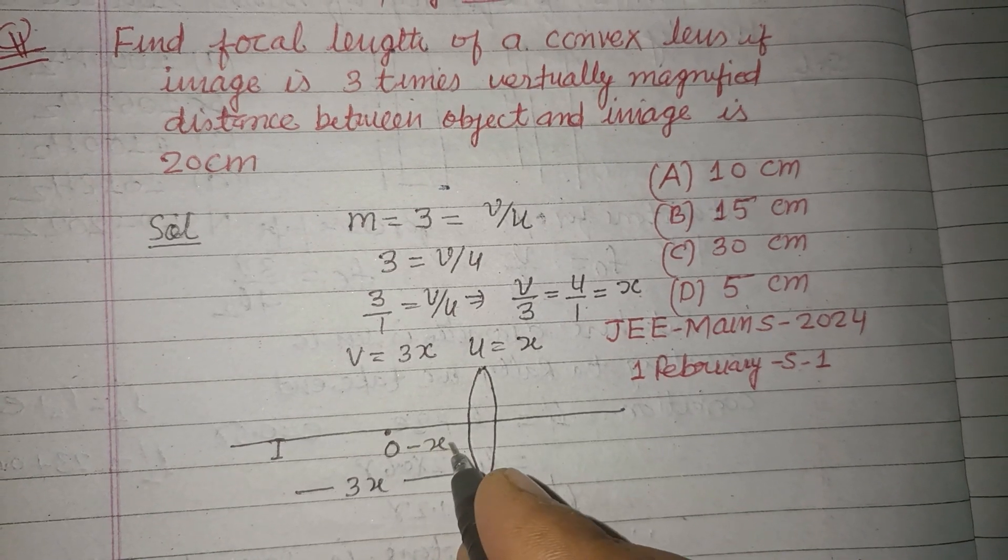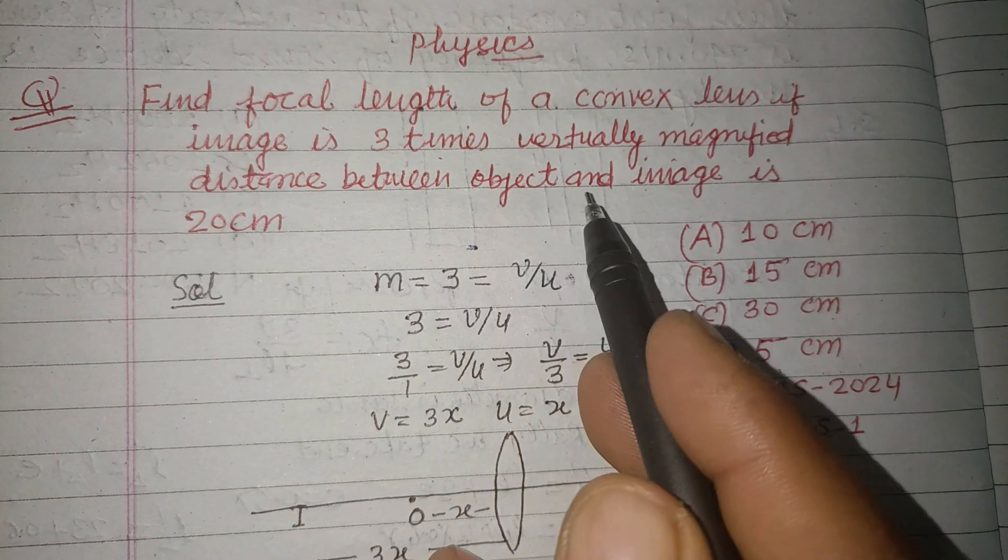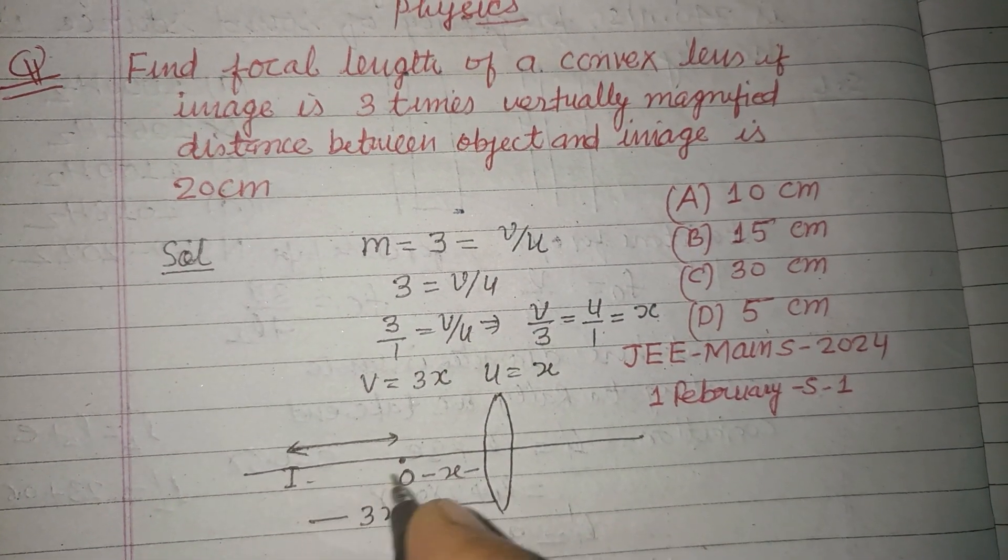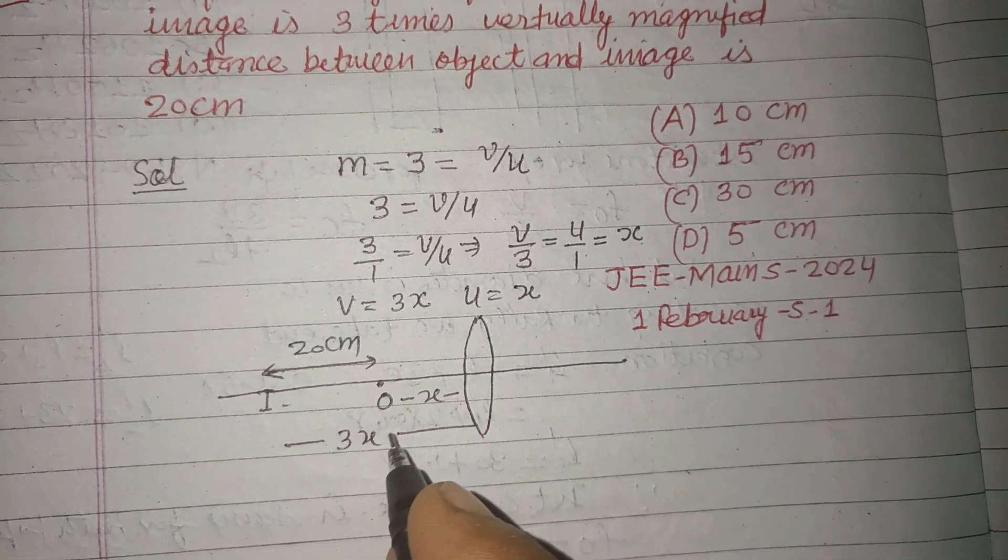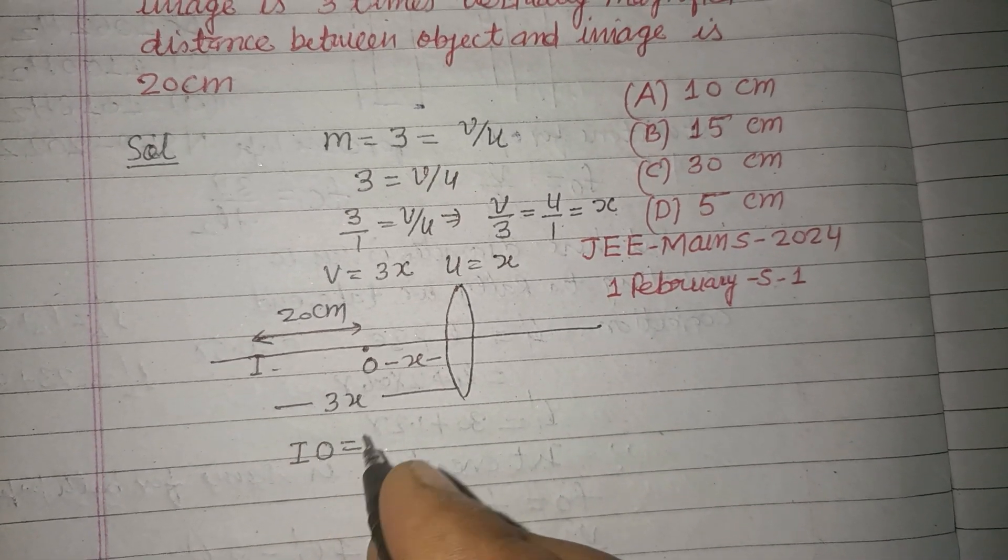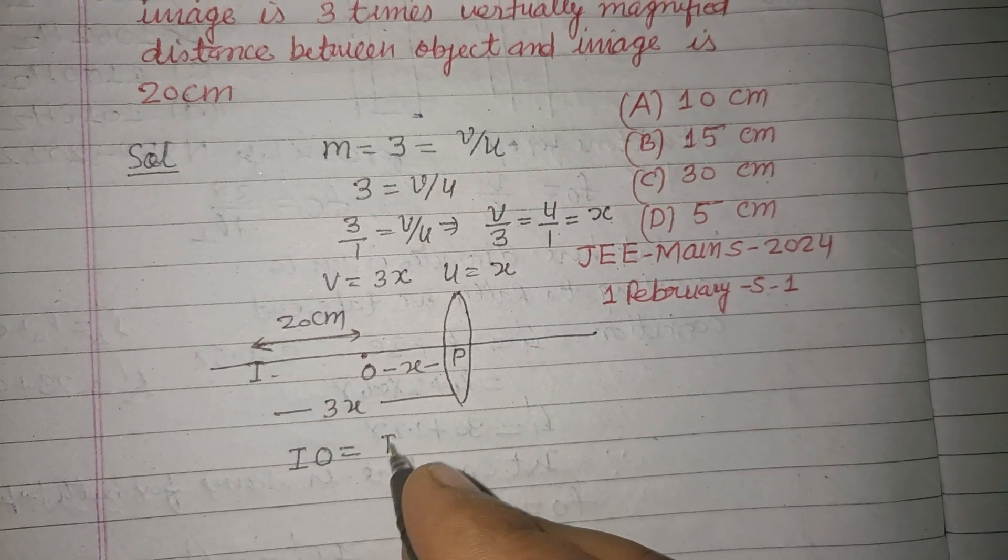And it is x. Now it is given that the distance between object and image is 20 centimeters. So from the figure, IO equals—let this be the pole—so IP minus OP.